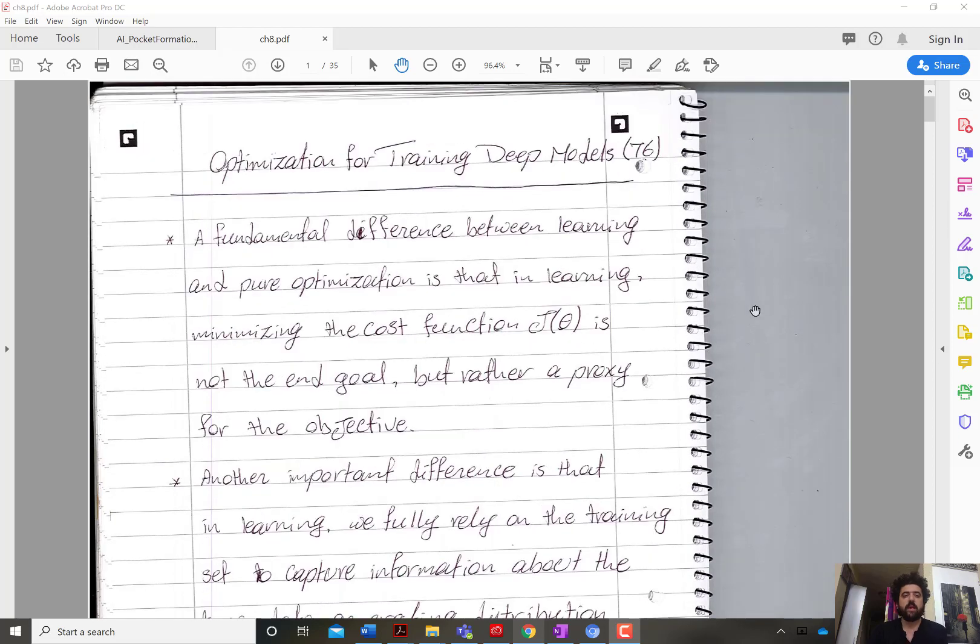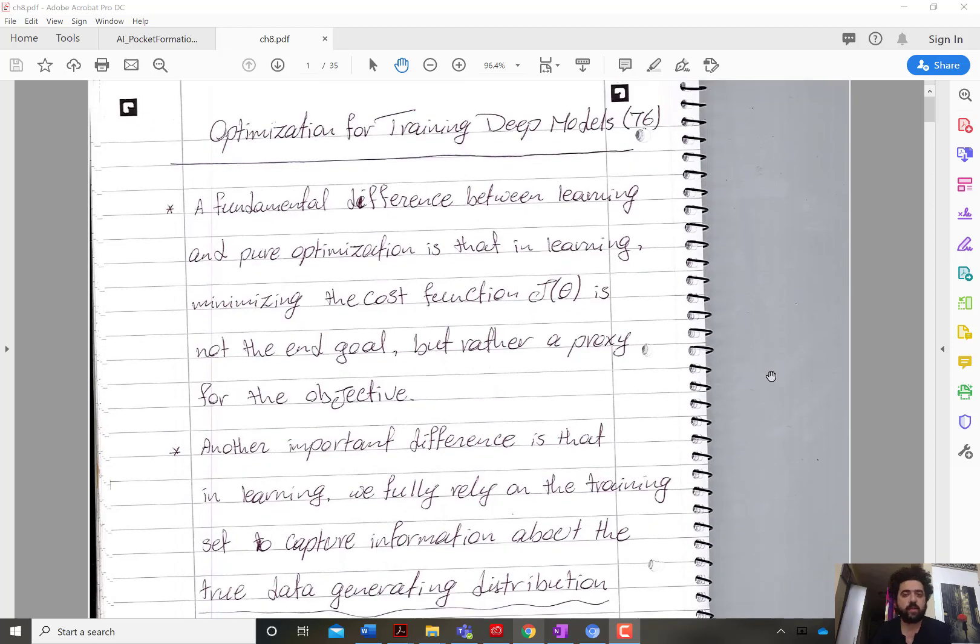Hi everyone and welcome to the first video of section 3, which is optimization for training deep models. This video is basically an introduction to what we'll be doing in the section. We will start with making a distinction from pure optimization - how is optimization for training machine learning models different from classical optimization problems?